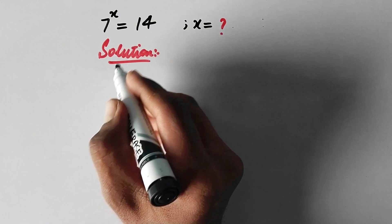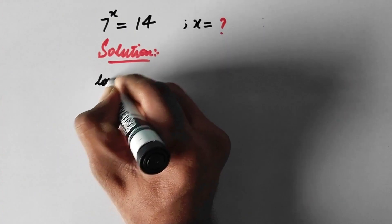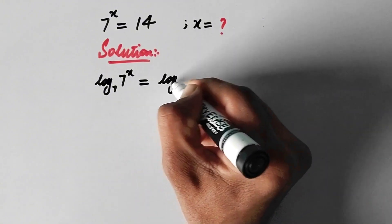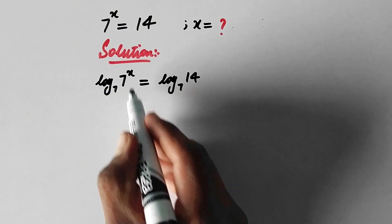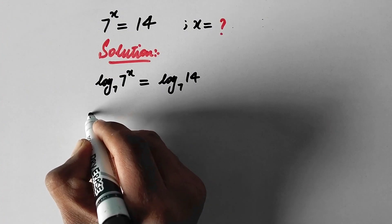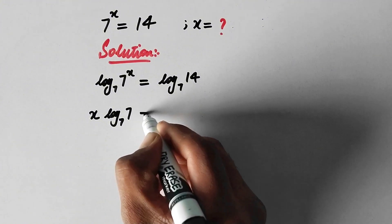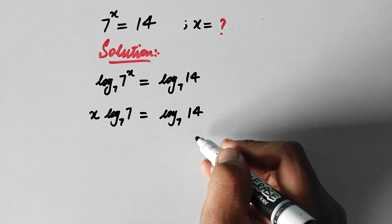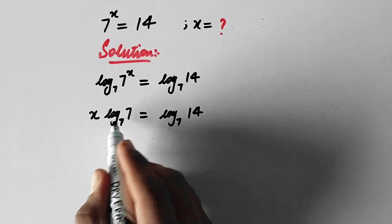By the first method, we will take log to base 7 on both sides of the equation. So here we will write: log to base 7 of 7 to the power x is equal to log to base 7 of 14. In the next step, we apply the property of log that the power comes before the log, so it becomes x times log base 7 of 7 is equal to log base 7 of 14. As we know, any log with the same base is always equal to 1.